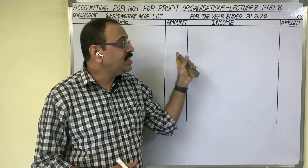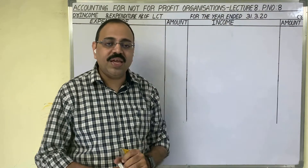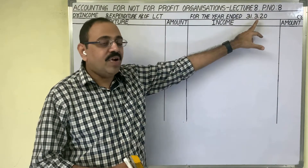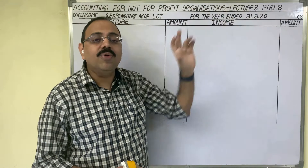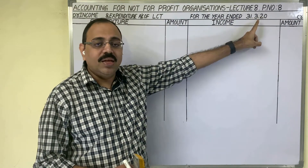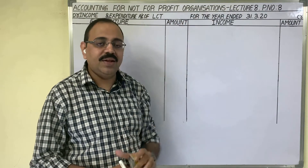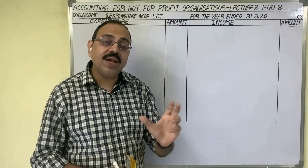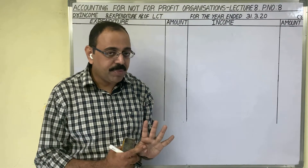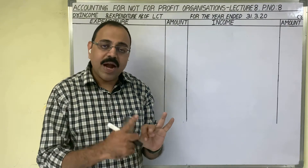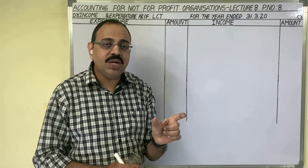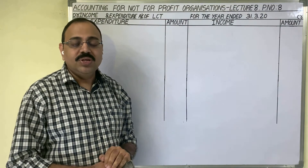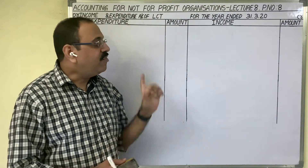In the question, receipts and payments account is given for the year ended 31st March 2020, and we are asked to prepare the income and expenditure account for the same date. The current accounting period is 2019-20. Their final accounts contain the receipts and payments account, income and expenditure account, and balance sheet. We have to prepare the income and expenditure account, which is a nominal account.